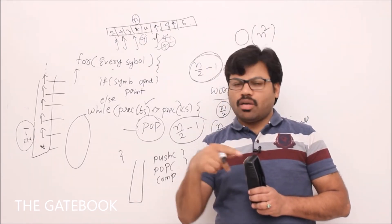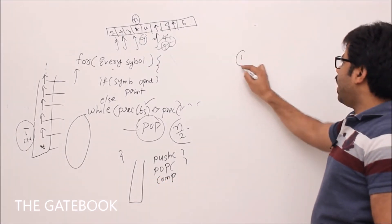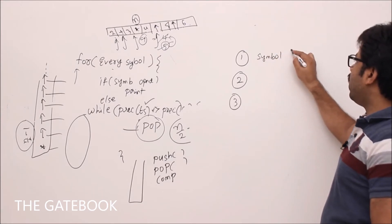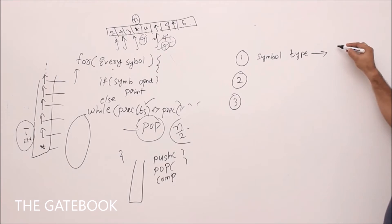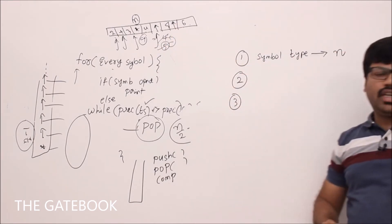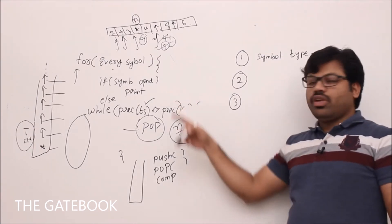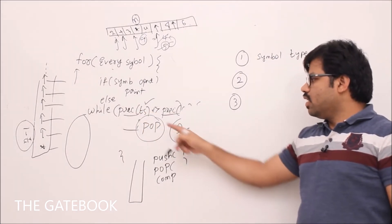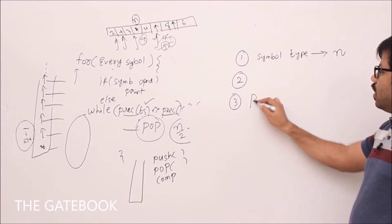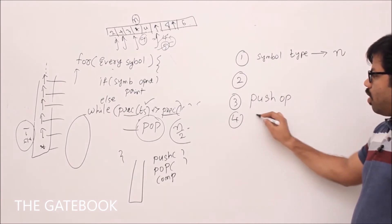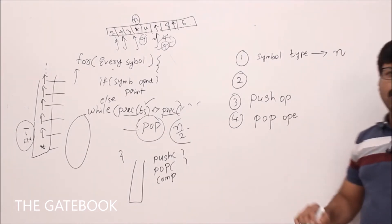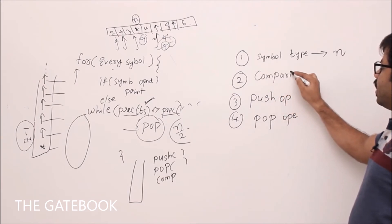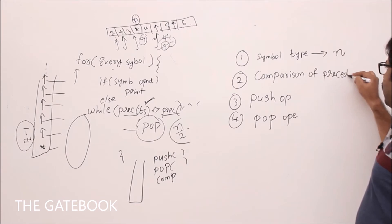Let's list the activities. First: checking whether each symbol is operand or operator — this takes constant time per symbol, so n units total for n symbols. Second: comparison of precedences — we'll come back to that. The other activities are push operations, pop operations, and printing.